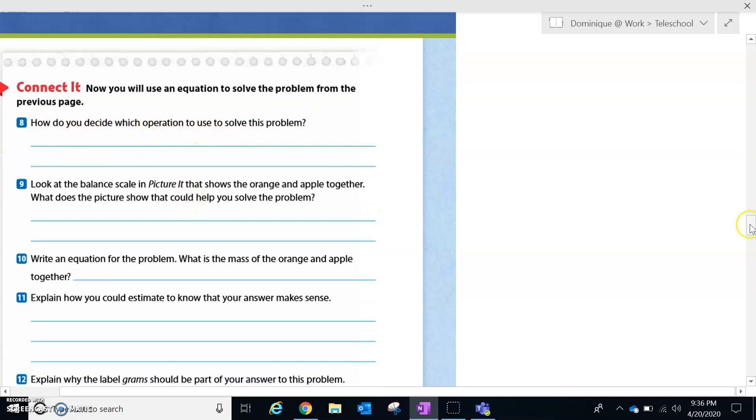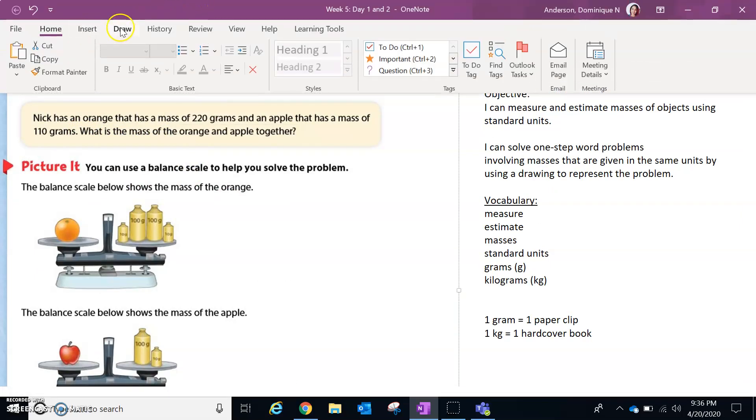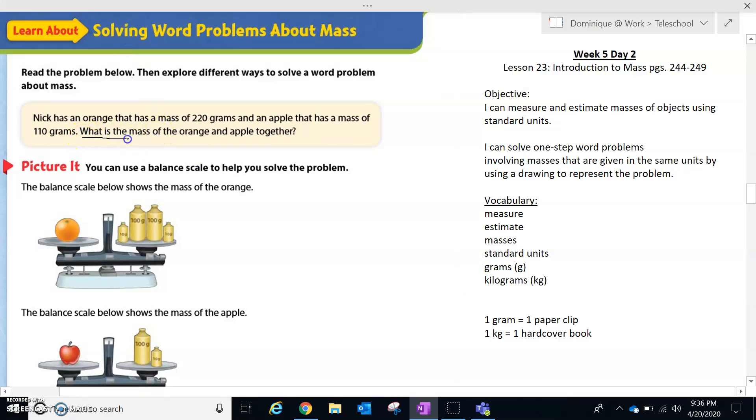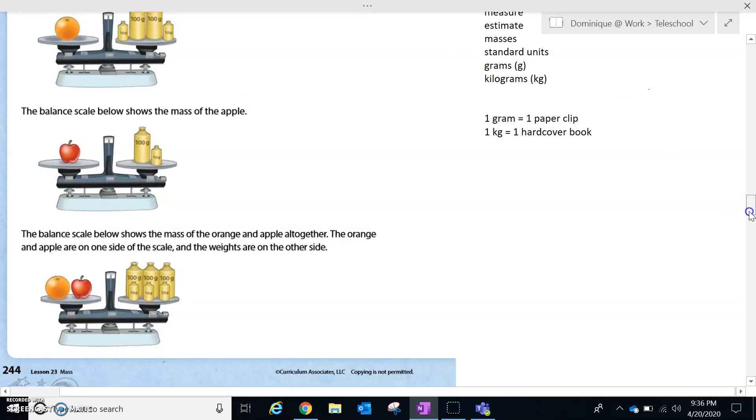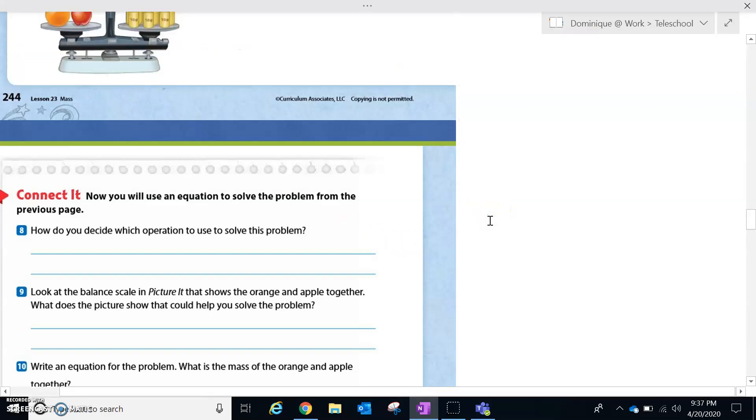So let's see what they want us to do. How do you decide which operation you used to solve the problem? Well, if we go back to the problem, let's look at our question. And I'm going to actually underline that for us. Our question says, what is the mass of the orange and apple together? So we want to think about our key words. And I know that together means to combine. And when we combine something, that means we're going to add. So for number A, we're going to write: I would look at the keyword together, which means to combine or add.